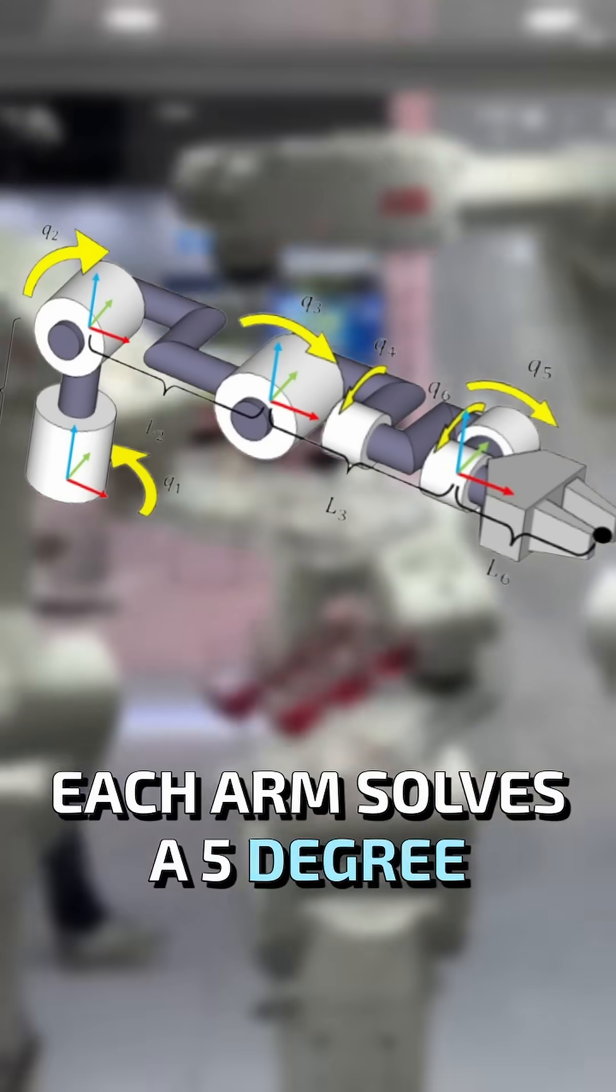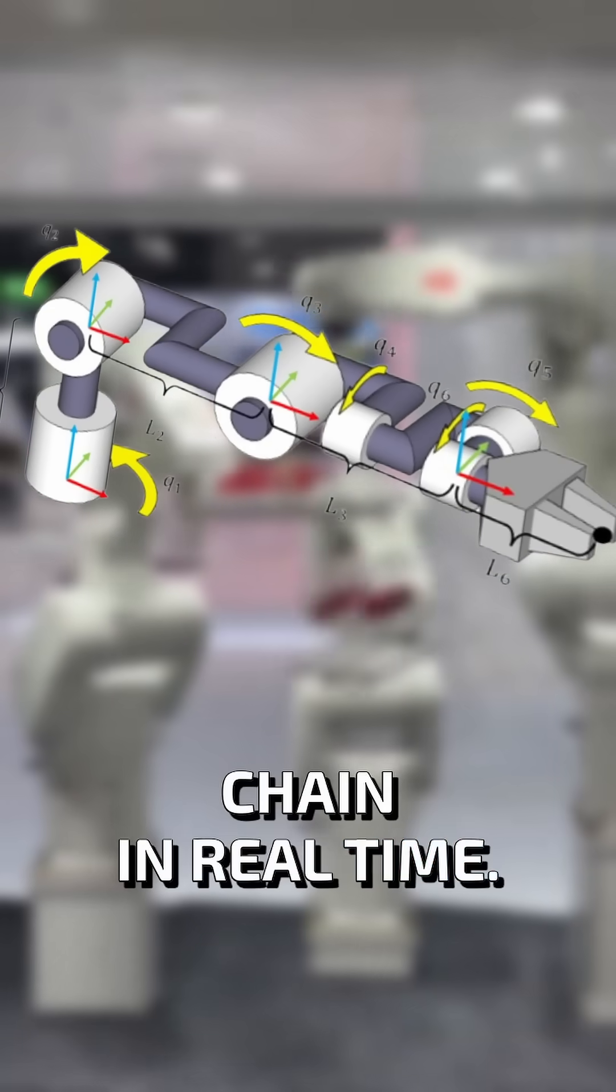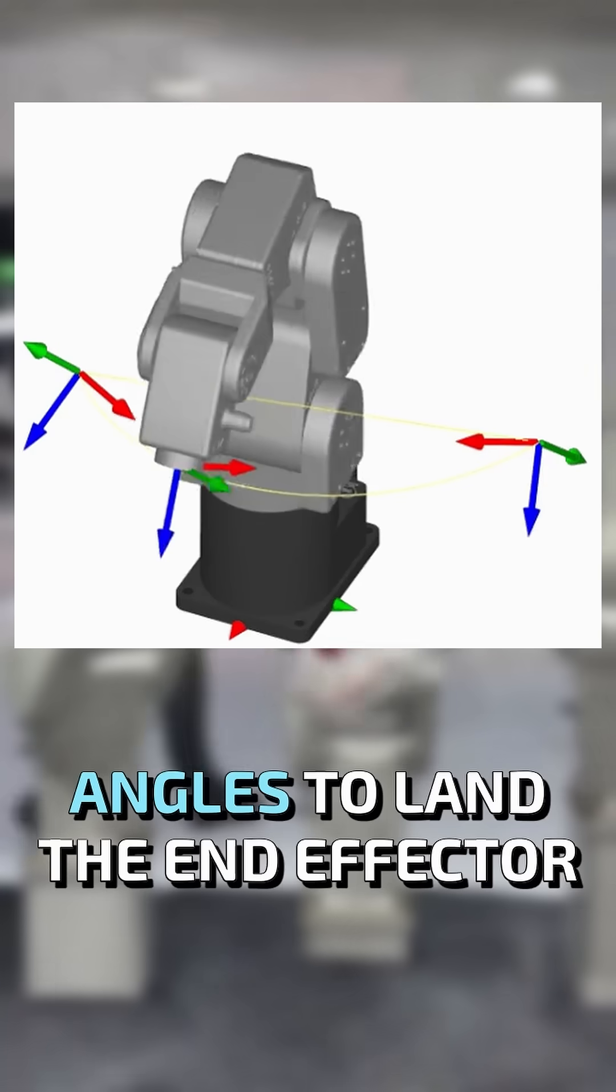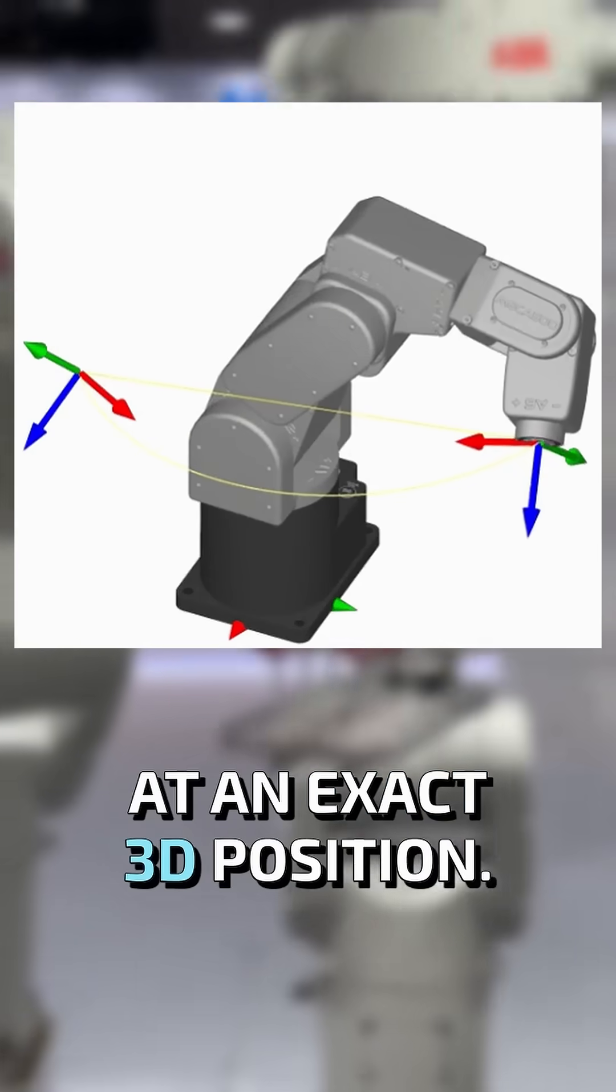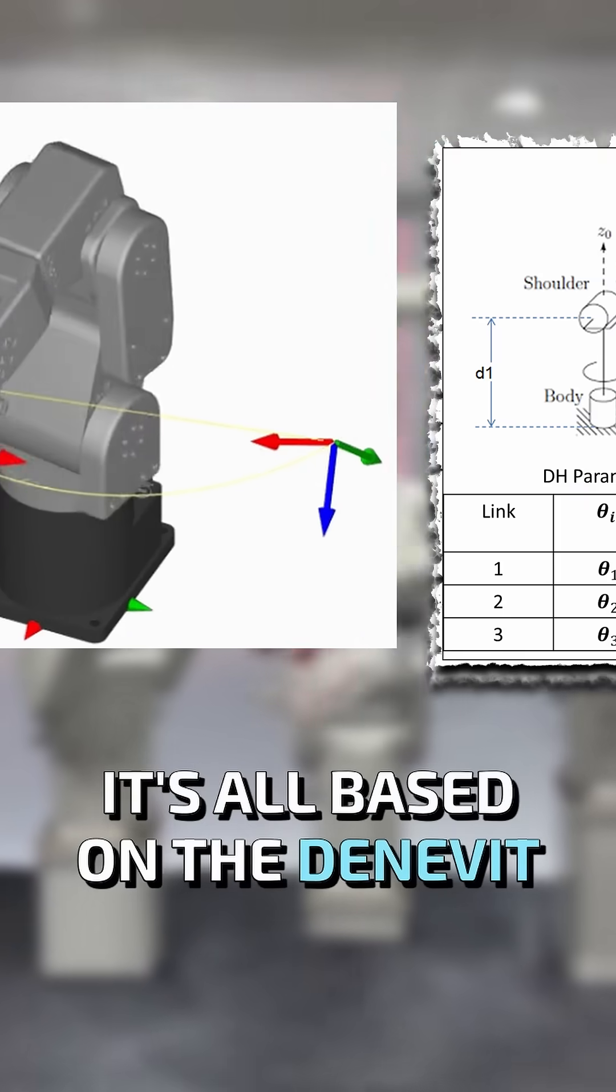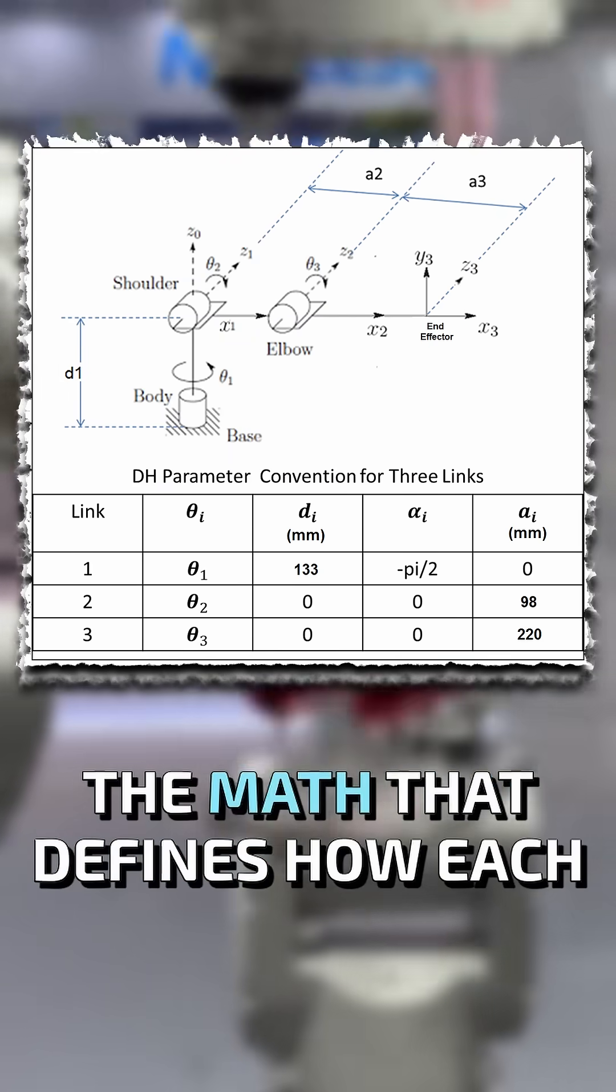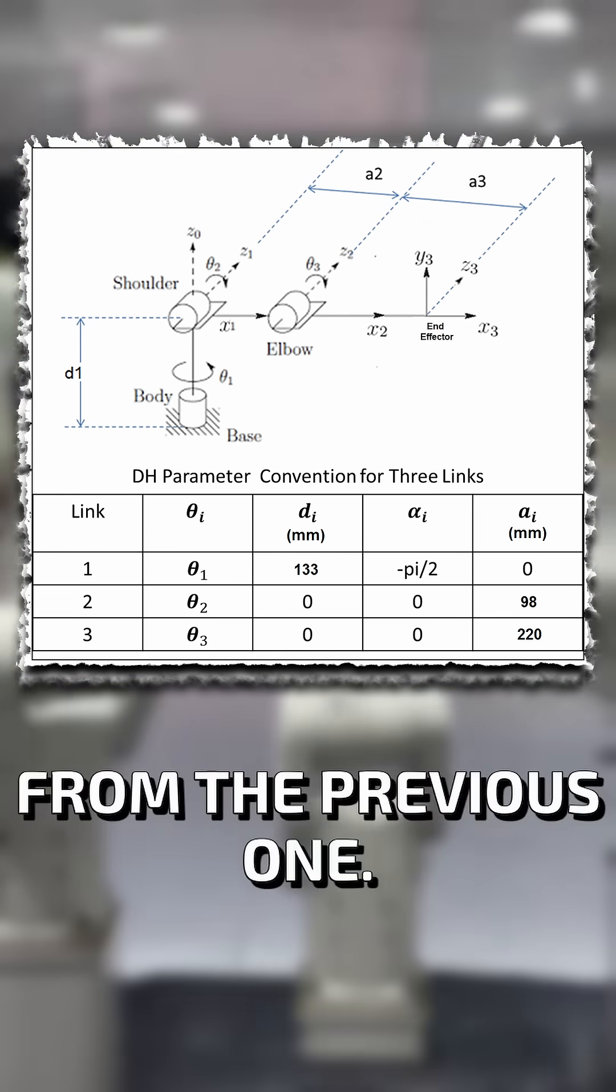Each arm solves a five-degree-of-freedom kinematic chain in real time. That means computing five joint angles to land the end effector at an exact 3D position. It's all based on the Denavit-Hartenberg parameters, the math that defines how each link translates and rotates from the previous one.